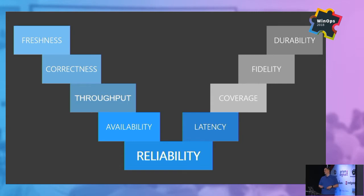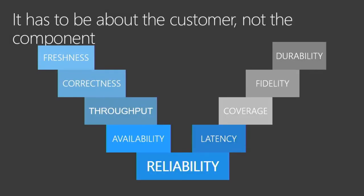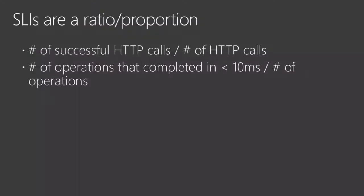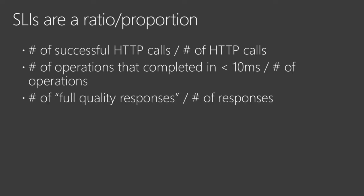But there's another angle to this. It's not just our perception of the system, but it's the user of the system that we have to make sure we take into account. SLIs, or service level indicators, are a proportion or a ratio — the number of successful HTTP calls over the number of HTTP calls total. Successful operations in a certain period of time over the total number. Or something like number of fully full-quality responses. What's a full-quality response? We might have to go talk to somebody to figure out what that is.